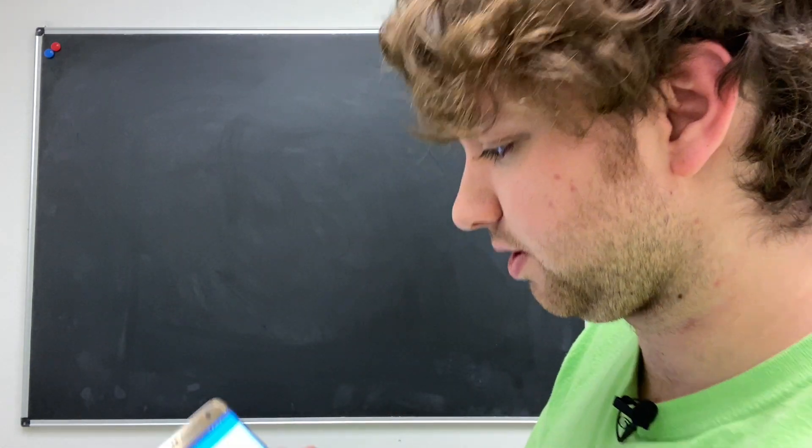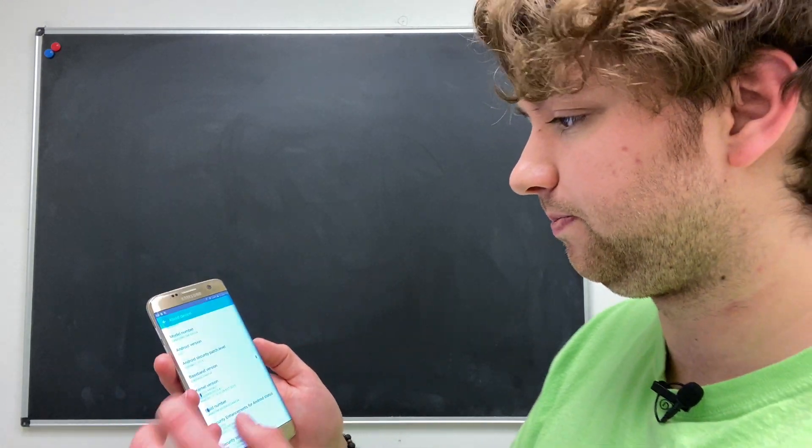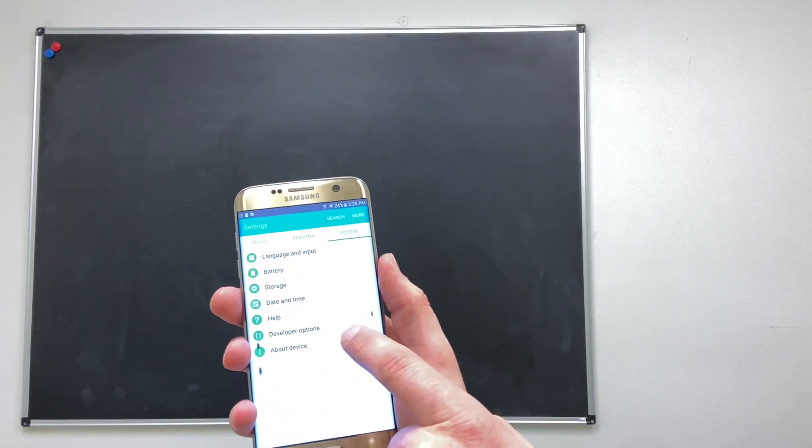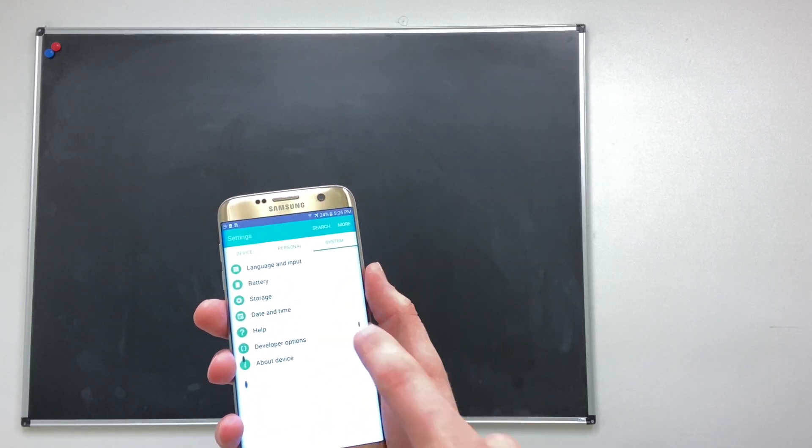Then what you do is click the back arrow, and now you should have Developer Options under System. You can click that.